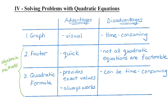And if you can't factor it, or even if you can't quickly factor it because the numbers are really large, then the quadratic formula will always work. The other thing that the quadratic formula does is it will always give you those exact values. If the roots are irrational, this method works.